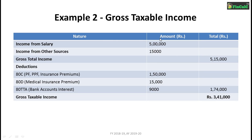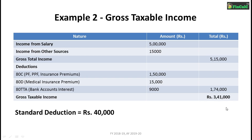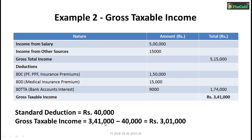Let's go to Example 2. Let's say we have income from salary as ₹5,00,000 and income from other sources as ₹15,000, with similar deductions as in Example 1. The gross taxable income is calculated as the difference of gross total income and deductions, coming to ₹3,41,000. Again, the standard deduction of ₹40,000 is applicable for salaried employees and pensioners. This standard deduction has replaced the two earlier components of medical reimbursement and transport allowance, which will no longer be allowed.